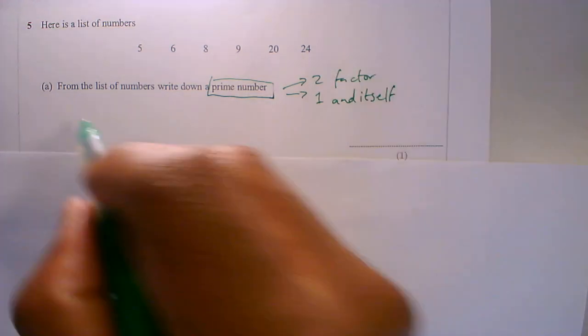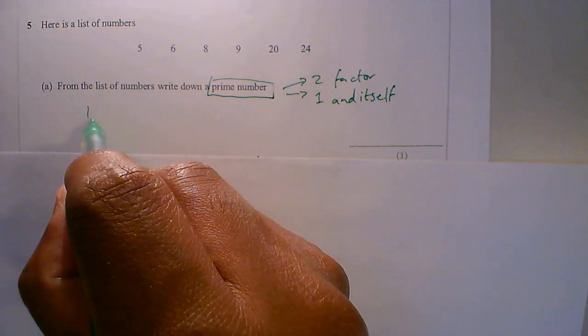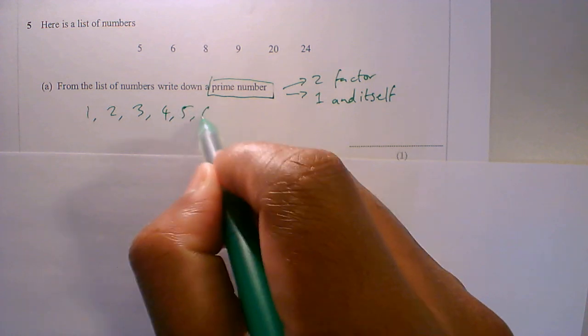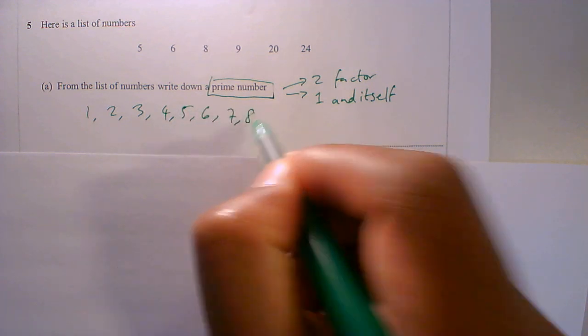So what numbers are prime numbers? If I just go 1, 2, 3, 4, 5, 6, 7, just write out some numbers.